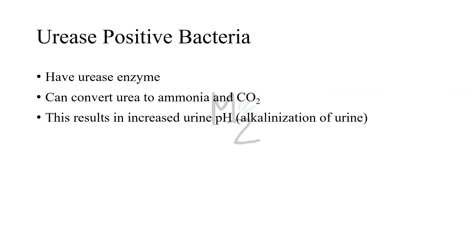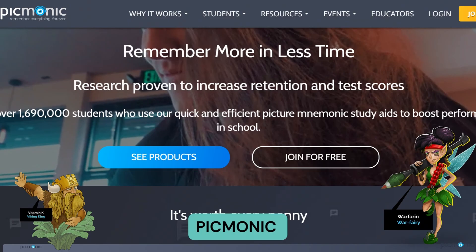Urease positive bacteria — the word 'urease' shows it's an enzyme because it ends with '-ase'. Bacteria that have the urease enzyme are urease positive bacteria. The function of urease is to convert urea to ammonia and carbon dioxide. This results in increased urine pH, meaning urine will be more alkaline — we can call it alkalinization of urine.